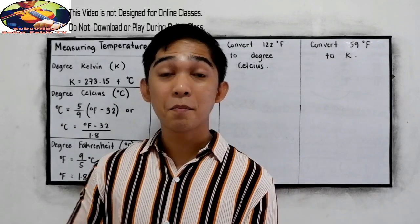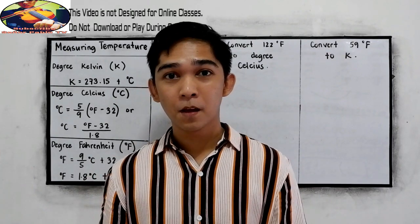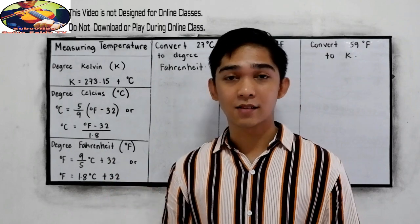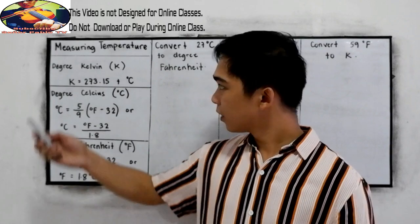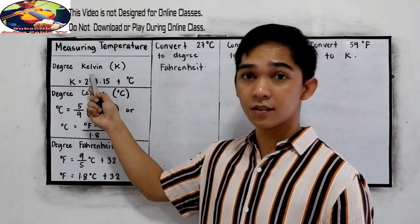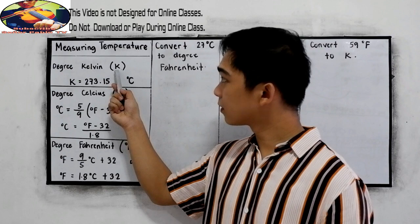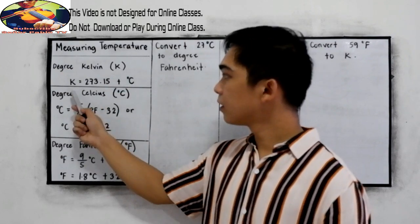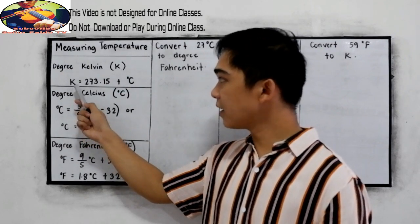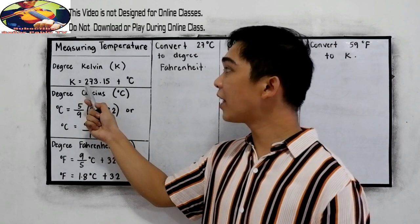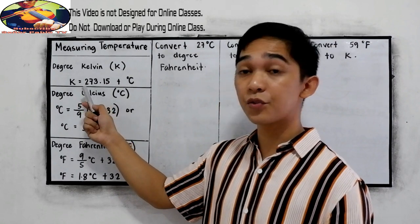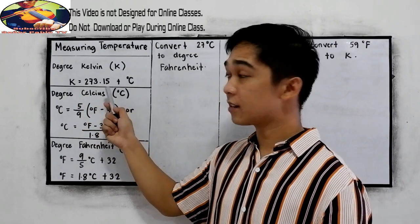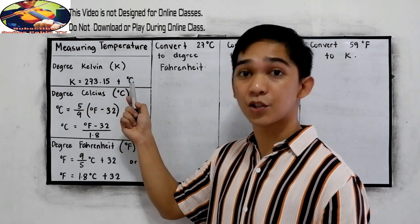In measuring temperature, you will be needing these formulas. For degree Kelvin, indicated as K: K is equal to 273.15 plus the given degree Celsius.